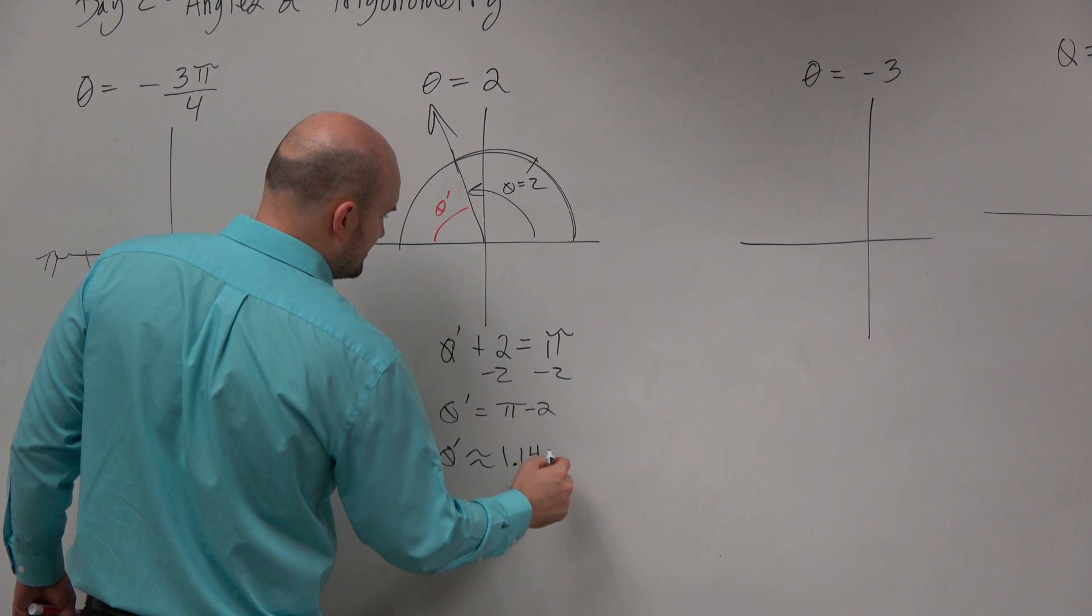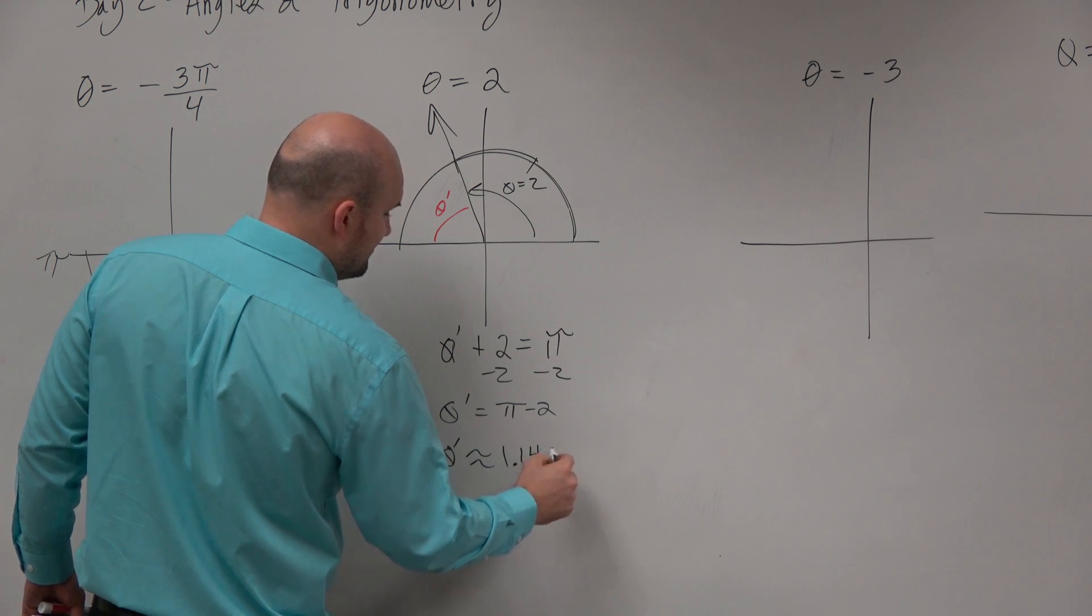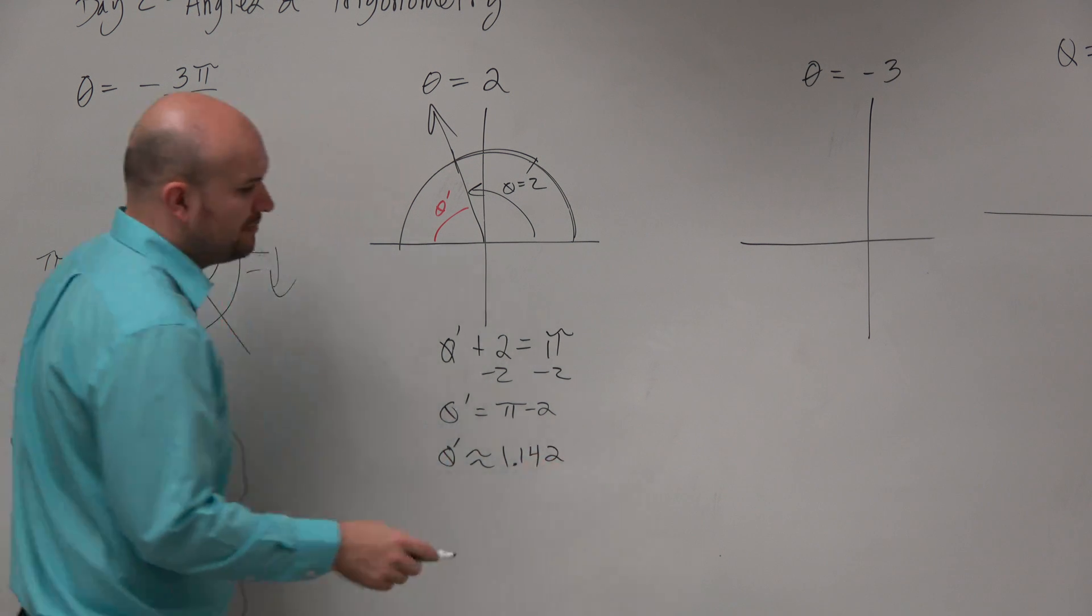And we could either truncate it or round it 1.159. So that would be roughly around 1.2 if we rounded it up.